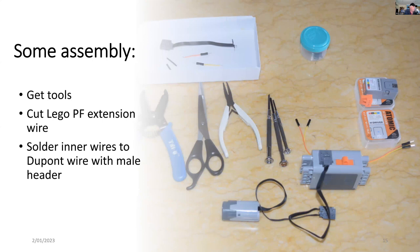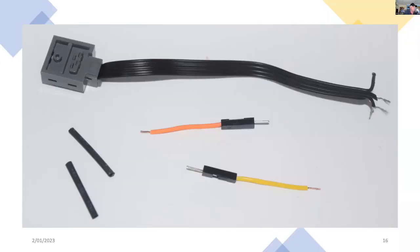But we need to do a bit of assembly. After we get the tools, we cut the Lego power function extension wire, and we solder the inner wires to DuPont wire with male headers. You can see where I've cut the wire, and I've exposed the inner wires ready to connect to these colored DuPont wires. And I've got a bit of heat shrink, so I'll be covering the solder with some of that.